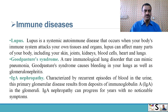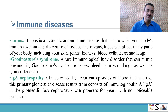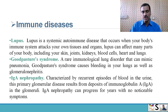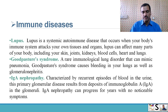Goodpasture syndrome is a rare immunological lung disorder that can mimic pneumonia. It causes bleeding in the lungs as well as glomerulonephritis. IgA nephropathy is characterized by recurrent episodes of blood in the urine. This primary glomerular disease results from deposits of immunoglobulin A in the glomeruli and can progress for years without noticeable symptoms.